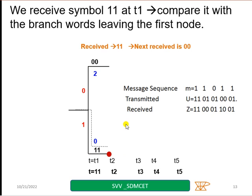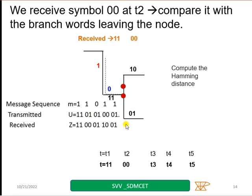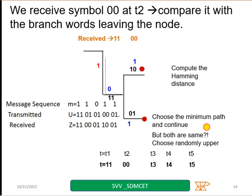Next, received is 00. I have 10. Compare these two. What is the Hamming distance? 1. What is the previous Hamming distance? 0. So this will become 1. Similarly, compare 01 and 00. We will get both 1, 1 Hamming distance. Now, choose a minimum path. But both are same, what to do. Choose randomly upper. So if I choose lower, nothing is going to happen. You will go to the right path only at the end. Let us take the upper portion and continue the discussion.